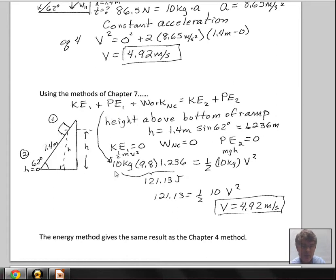We calculate with mgh: the mass, g (9.8), and I've calculated here h = 1.236, using 1.4 meters as the hypotenuse of the triangle, and then sine of 62 degrees gives us this opposite side, gives us h = 1.236. That's 121.13 joules. That is the only term that's non-zero on the left side. We started from rest, the kinetic energy is zero. We're on a frictionless surface, so the work of friction is zero.